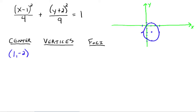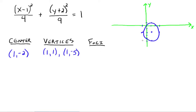Remember, we're just going for a sketch — not trying to be absolutely perfect, but it should look like an ellipse. We have a vertical major axis because the bigger number, 9, is under the y squared part. So the vertices are 1, 1 — since from center 1, negative 2 we went up 3 — and 1, negative 5, since we went down 3.